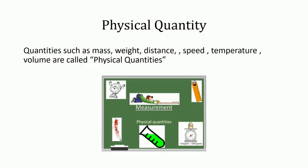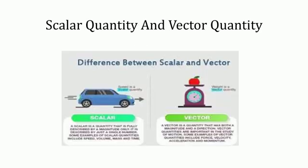A physical quantity is a quantity which can be measured. For example, quantities such as mass, weight, distance, speed, temperature, and volume. A physical quantity is always measured of natural non-living objects. A value and a unit are used to express the magnitude of a physical quantity. The meaning of magnitude is size or quantity. This leads us to scalar quantity and vector quantity.